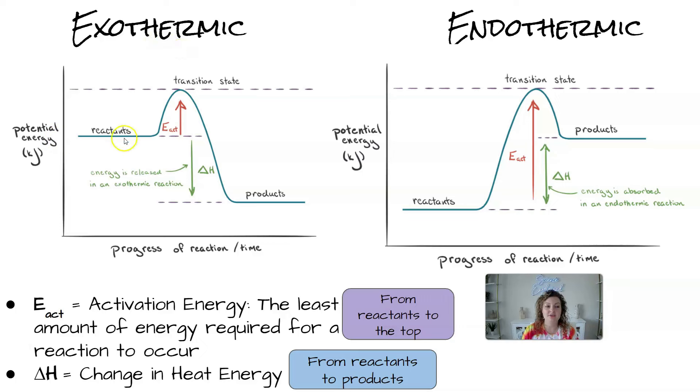So you can see that for exothermic, our reactants have a much higher potential energy than our products do. And then the opposite goes for endothermic. Our products have a much higher potential energy than our reactants do over here.